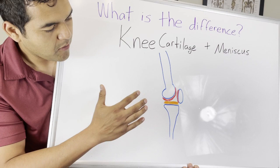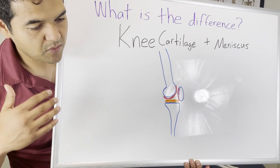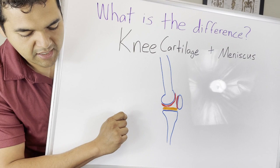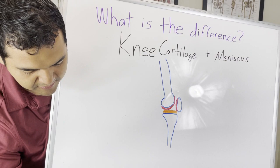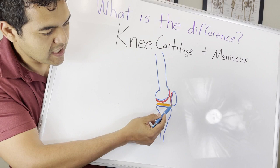When there are abnormal forces going through the knee because of muscle imbalances or the way you sit, walk, or move, that meniscus — the orange tissue — can get damaged, irritated, or torn. The cartilage lining in red on the back of the kneecap and on the end of the thigh bone is what we typically talk about as cartilage. It's possible to damage any of these, and they happen differently.